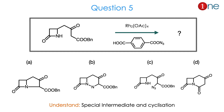Question number 5. The starting material contains a four-membered ring attached to a long chain with a carbonyl and an ester of a benzene group. You are using a rhodium catalyst. You are asked to find the product from cyclized options — whether the ring size is 5-membered or 6-membered, or whether the carbonyl or ester group position is the key question. From the rhodium catalyst and reactant, a special intermediate is involved and cyclization occurs. The answer is A.